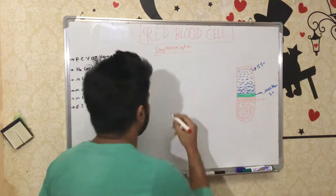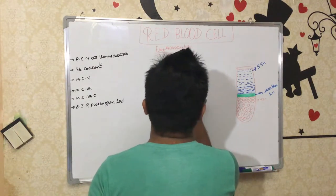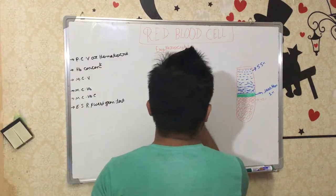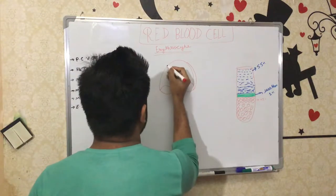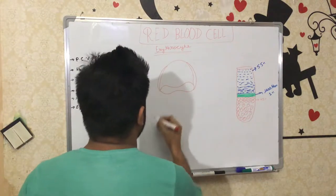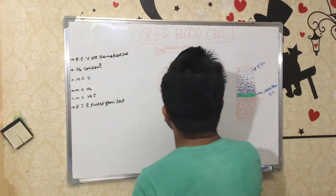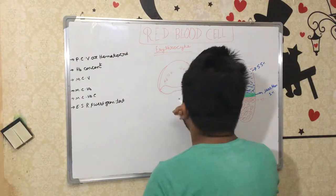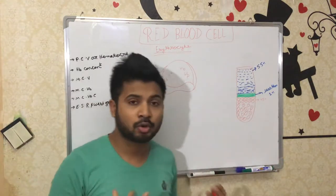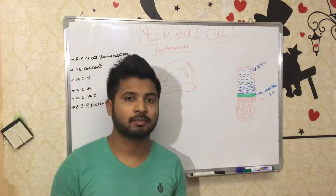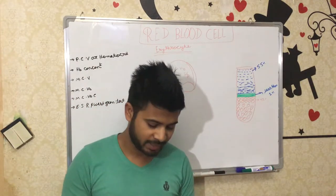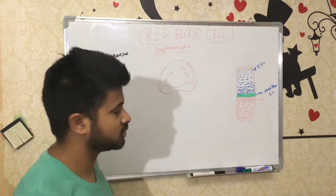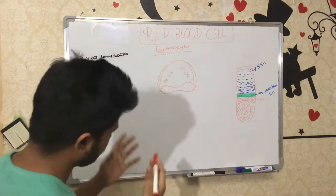For example, the RBC has a biconcave shape. Inside the RBC, a lot of hemoglobin is stored, so more and more hemoglobin is kept in the RBC as it travels, and more and more oxygen is transported all over the body. It also excretes the waste product CO2 from tissue to the lungs, and then the lungs exhale the CO2. This is the main function of the RBC.